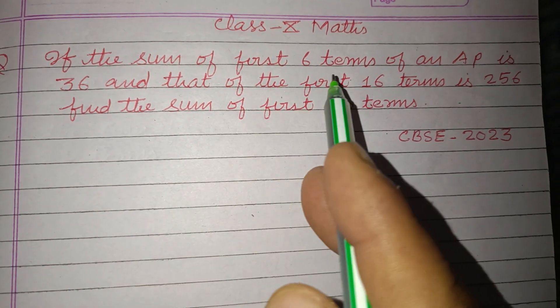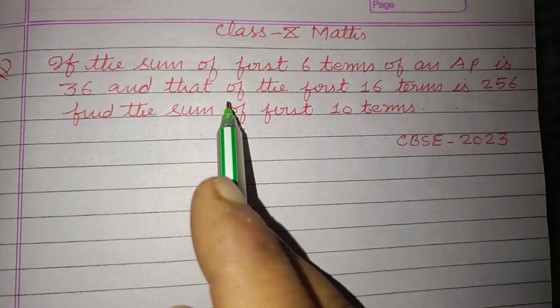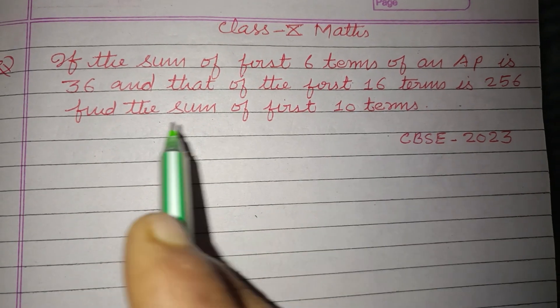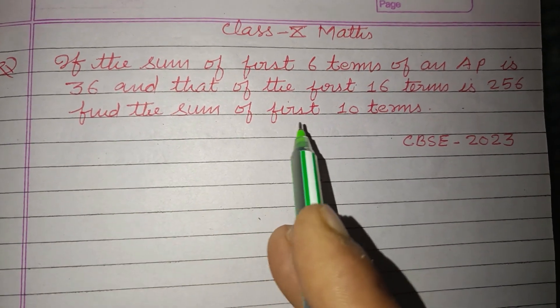If the sum of first 6 terms of an AP is 36 and that of the first 16 terms is 256, find the sum of first 10 terms.